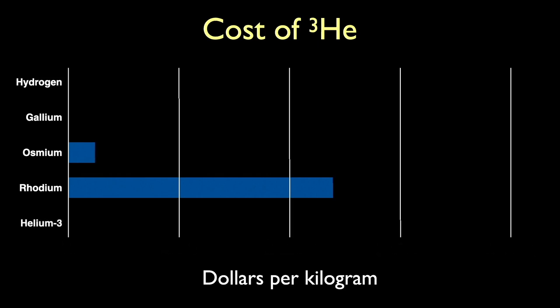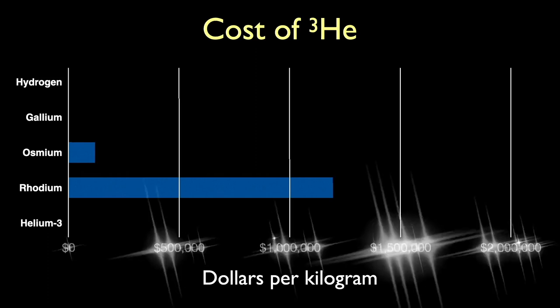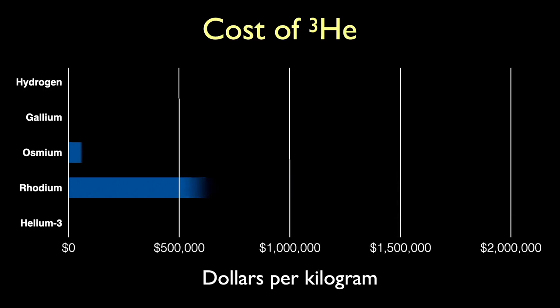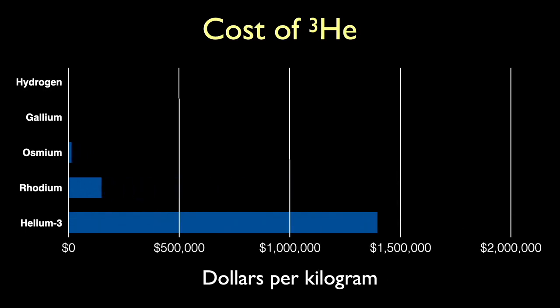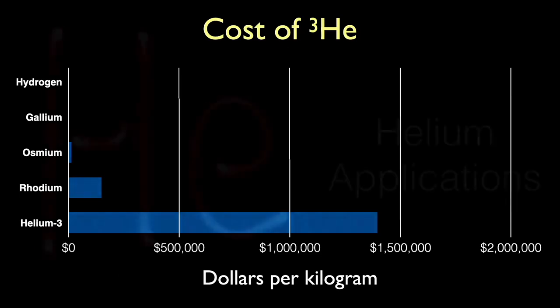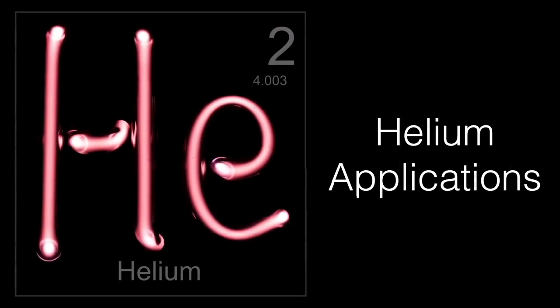We've finally arrived at comparing helium-3. We have to yet again change our scale factor by a factor of 10 and this reduces the osmium and rhodium bars but we can now see that helium costs $1.4 million per kilogram. Pretty impressive for a kilogram of gas. Believe it or not, even at this price, helium-3 has its applications.